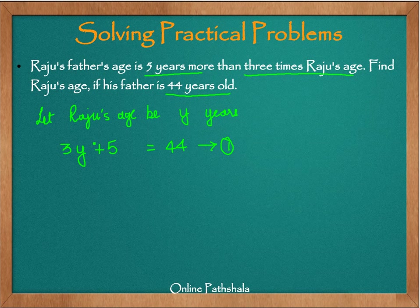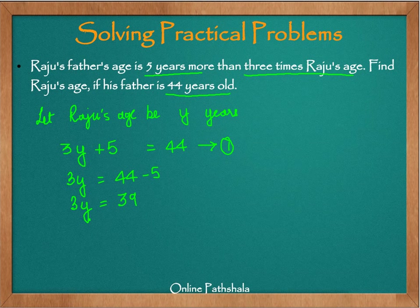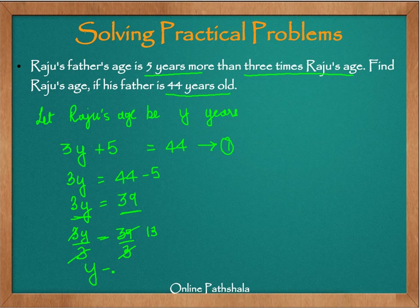Solving this equation will give us y, which tells us Raju's age. Using the transpose method, we transpose plus 5 from the left hand side to the right hand side as minus 5. So we have 3y equals 44 minus 5, or 3y equals 39. To isolate y, we divide both the left and right hand sides by 3. We get 3y divided by 3 equals 39 divided by 3. The 3 cancels and 39 divided by 3 gives us y equals 13, so Raju's age is 13 years.